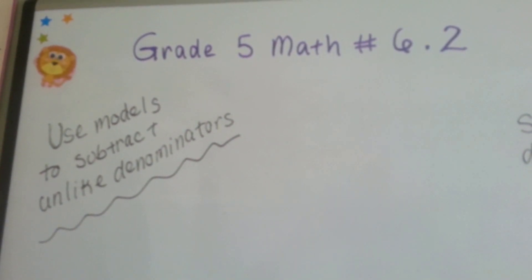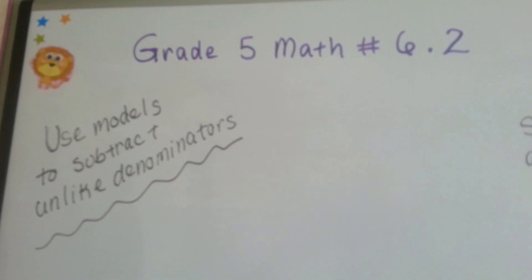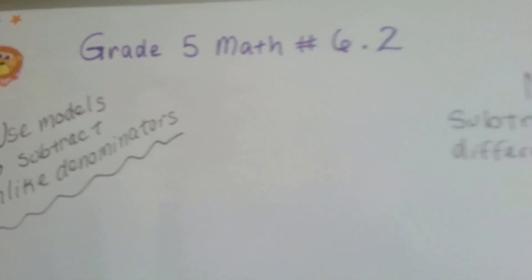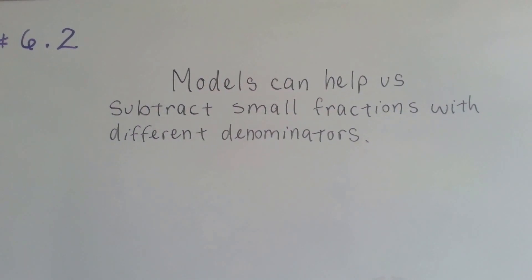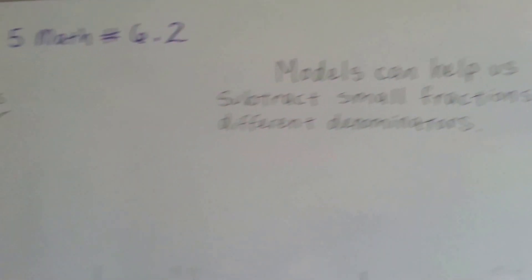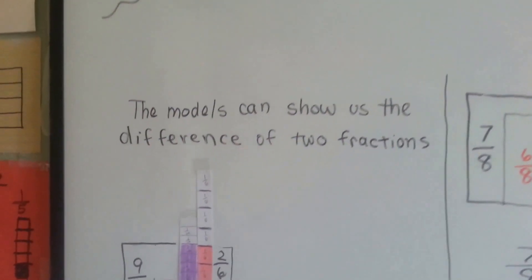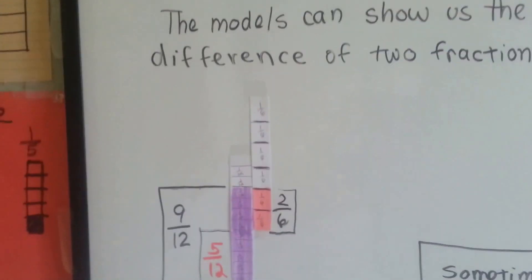Grade 5 math number 6.2: use models to subtract unlike denominators. Models can help us subtract small fractions with different denominators. The models can show us the difference of two fractions.